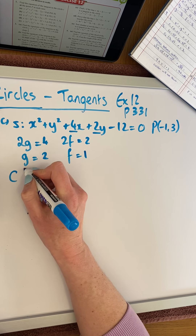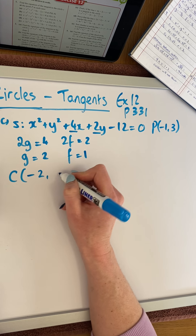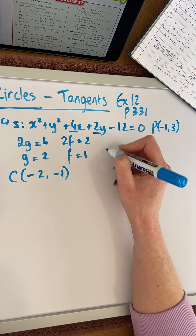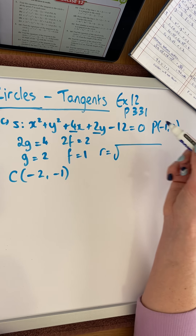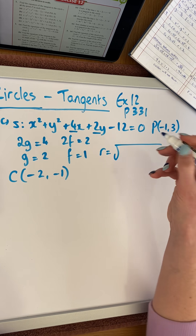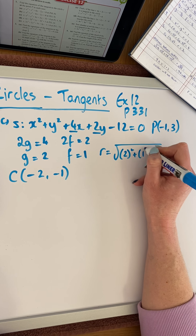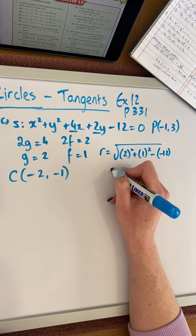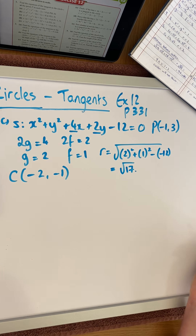Therefore the center, which is (−g, −f), is the coordinate (−2, −1). The radius of the circle is found from the formula √(g² + f² − c), so that is √(2² + 1² − (−12)), which gives us a radius of √17.